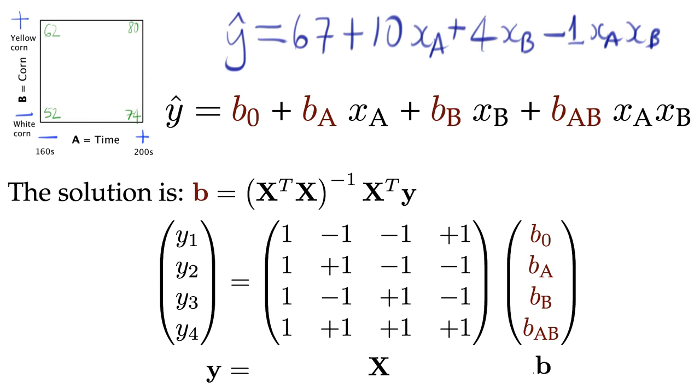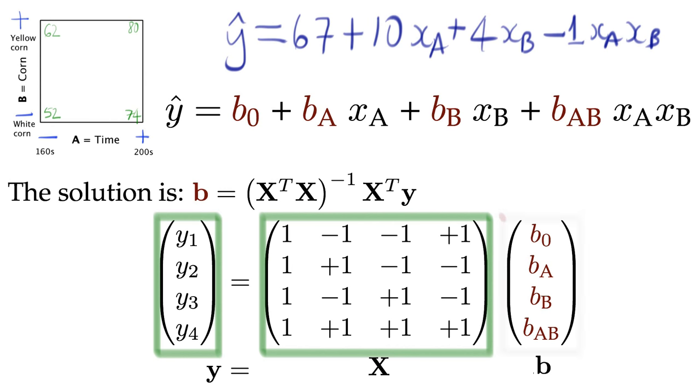All we require is the x matrix and the y vector. And we have these. The x matrix is assembled from the standard order table. And the y vector is simply the four experimental outcomes. The software will calculate these four parameters. In other words, the four entries in the vector b. Those correspond to b0, the intercept, bA, bB, and bAB for the two-factor interaction.